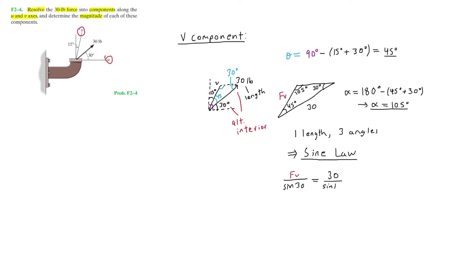Isolating FV by multiplying the sine 30 to the other side, we get FV is equal to 30 times sine of 30 degrees divided by sine of 105 degrees. Solving this using a calculator, this equals 15.53. Therefore the V component of the force FV will be equal to about 15.5 pounds.